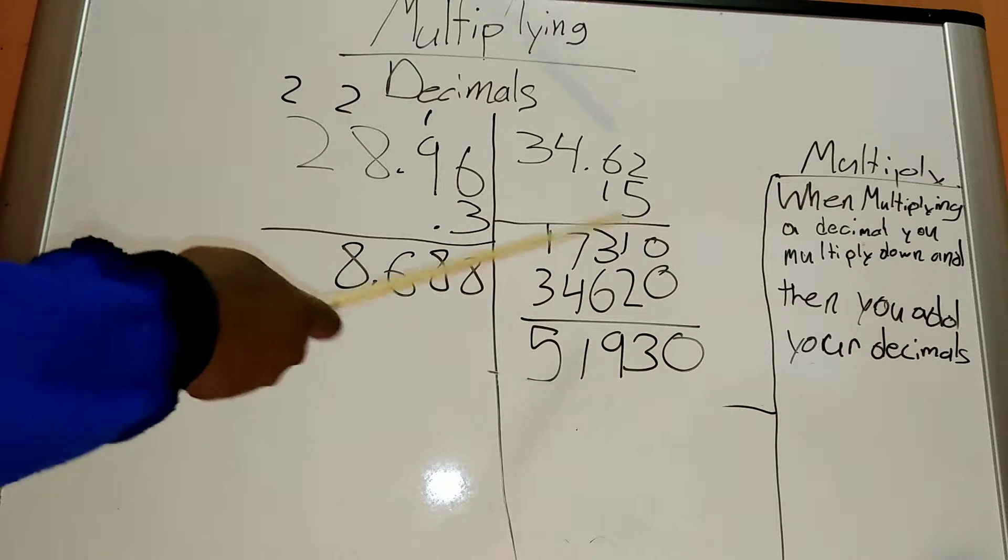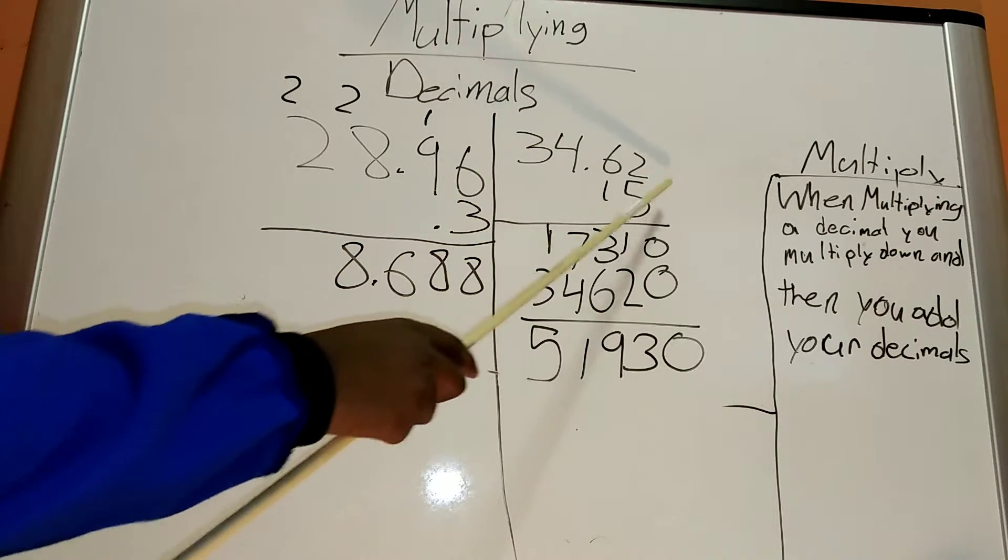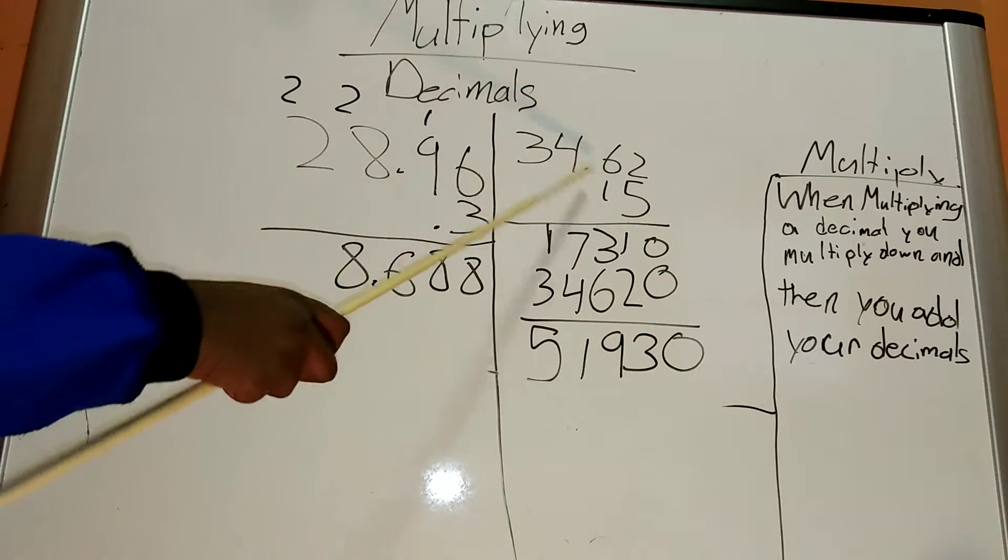So, I'm going to be doing another problem, which is over here. So then after you multiply all of these, you only have 1 decimal.